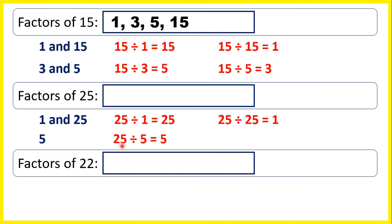5 is also a factor of 25, because 5 times 5 is 25, or because when you divide 25 by 5, you don't get a remainder. So the factors of 25 are 1, 5 and 25.